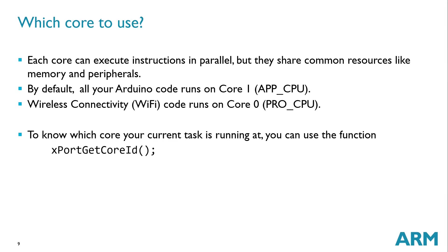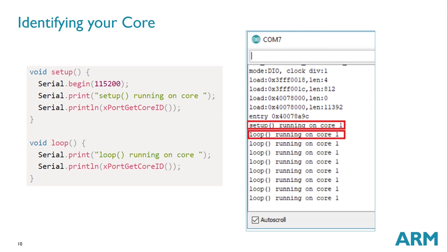So which core should you use? You can execute instructions in parallel, but they share common resources like memory and peripherals — all hardware resources are shared, but the code itself can execute on different cores. By default, all your Arduino code runs on Core 1, which is what we call the app CPU. The Wi-Fi or connectivity-based code runs on Core 0, called the pro CPU. To know which core your current task is running on, you can use the function xPortGetCoreID. This simple code lets you see that your default code is always running on Core 1.